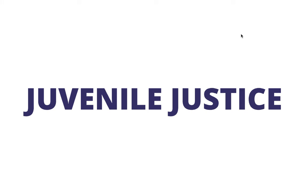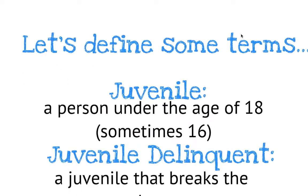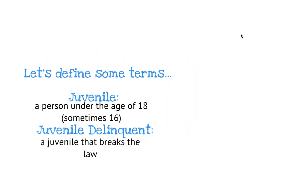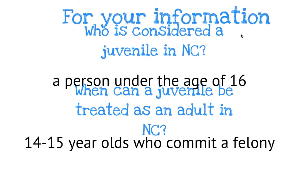Moving on to juvenile justice — the first thing we need to figure out is who is a juvenile. A juvenile is defined as someone under the age of 18, but sometimes the age of 16. In North Carolina, the age was recently changed to 18, so in this presentation it will say 16, but in actuality it is 18. A juvenile delinquent is a juvenile who breaks the law.